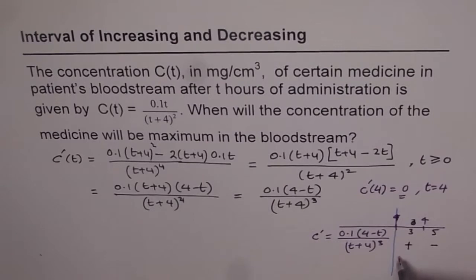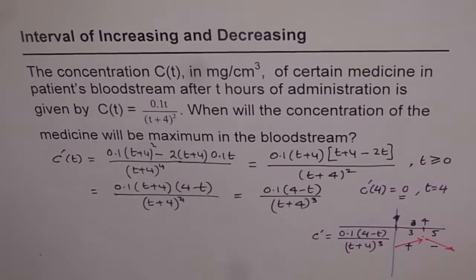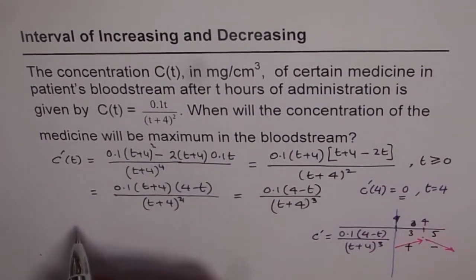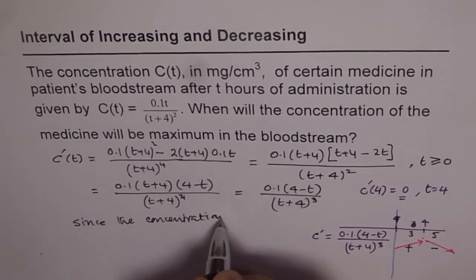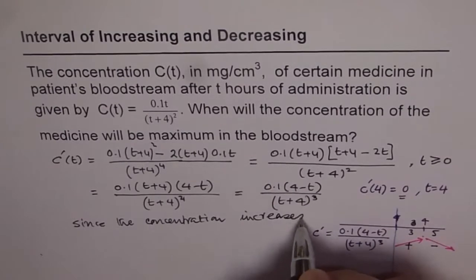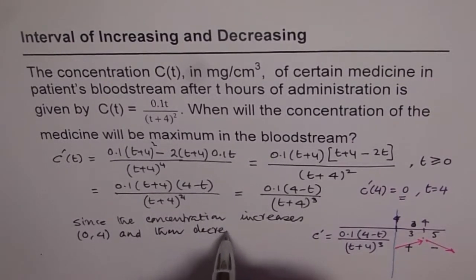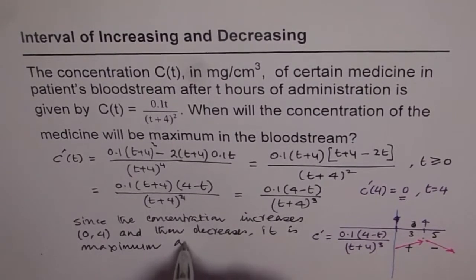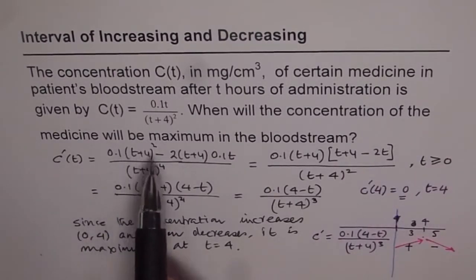As you can see, the concentration is increasing as time goes up to T = 4 and thereafter it is decreasing. Therefore, at T = 4 we have the maximum concentration. Since the concentration increases on the interval (0, 4) and then decreases, it is maximum at T = 4. That is how we answer when the concentration of the medicine will be maximum in the bloodstream.